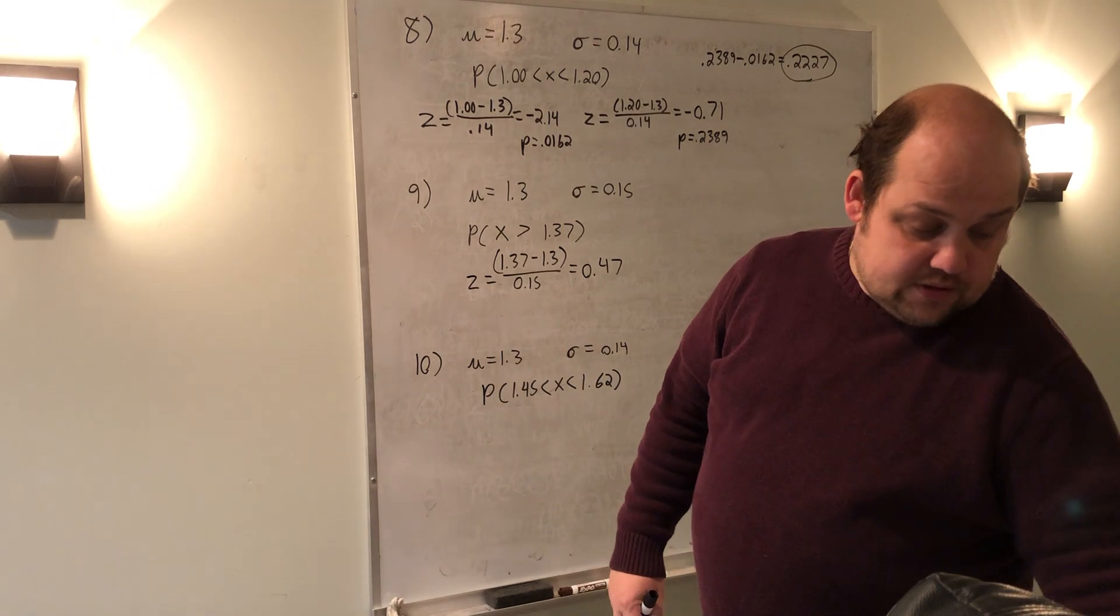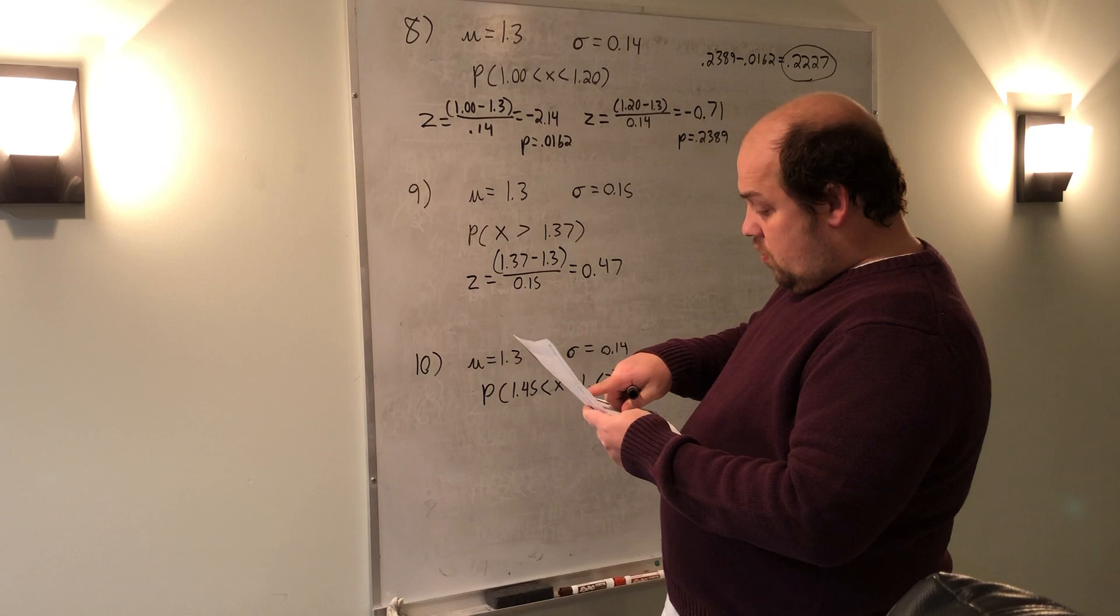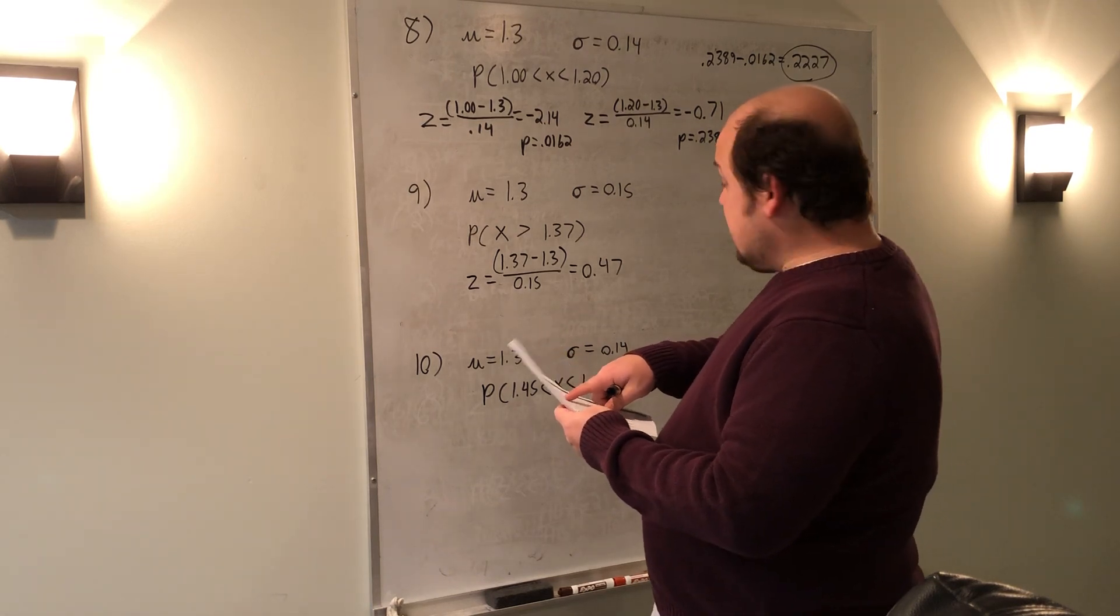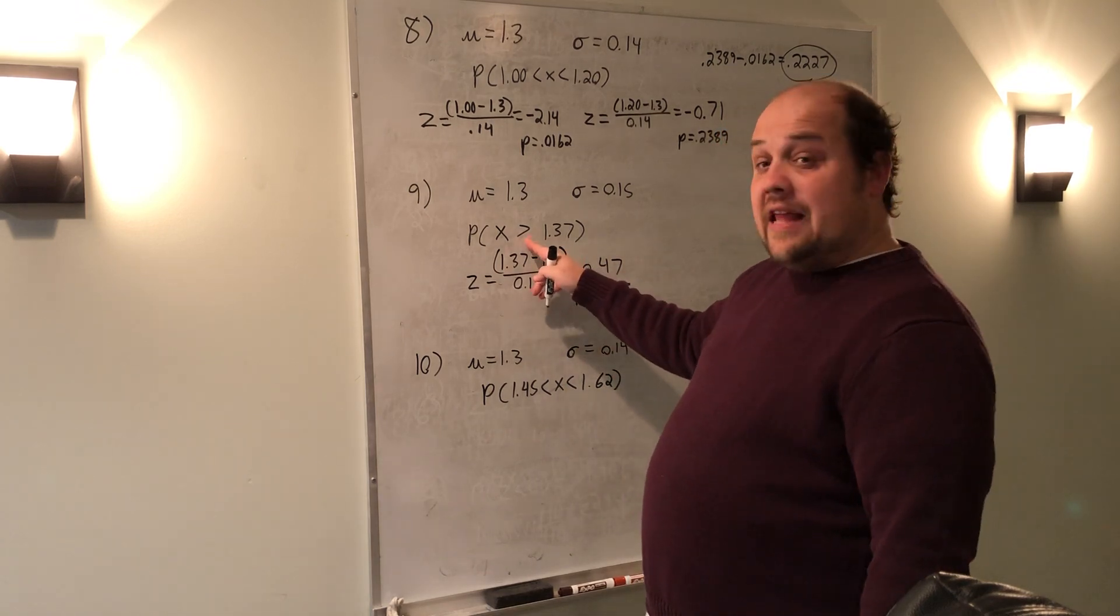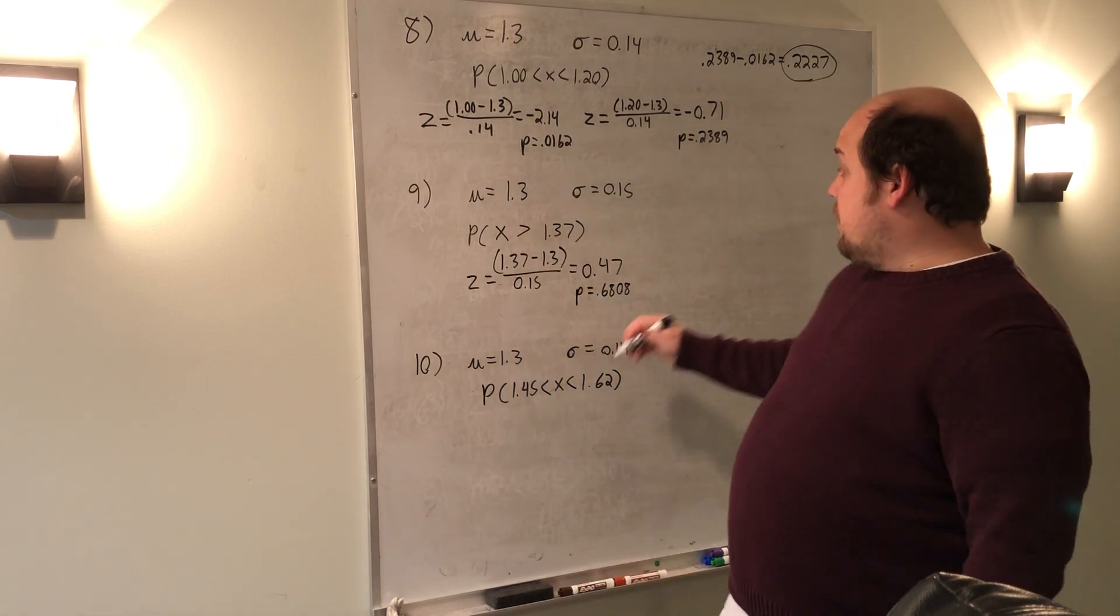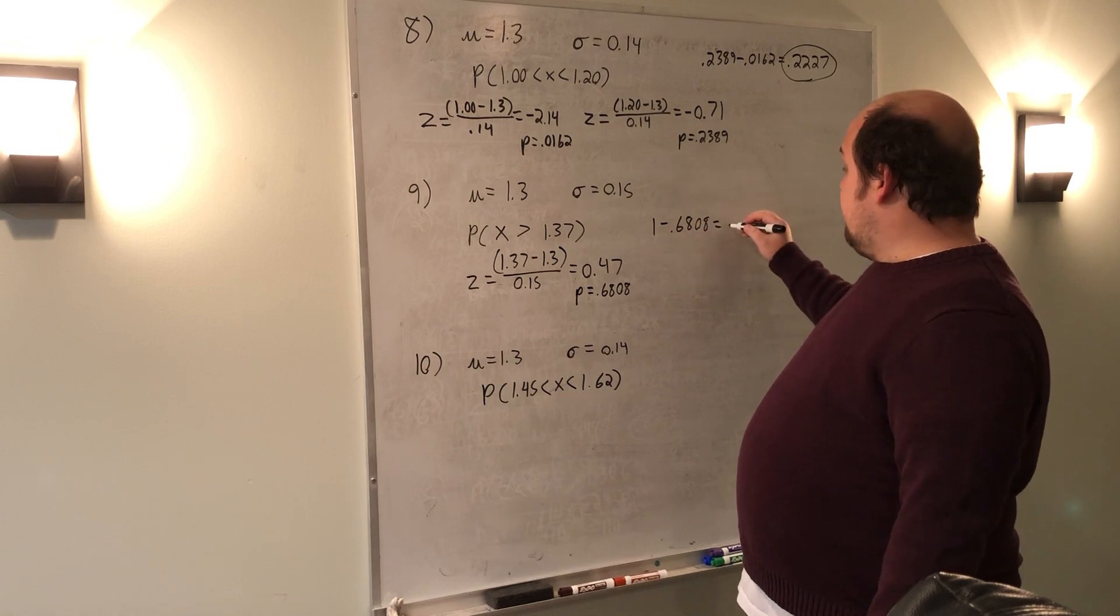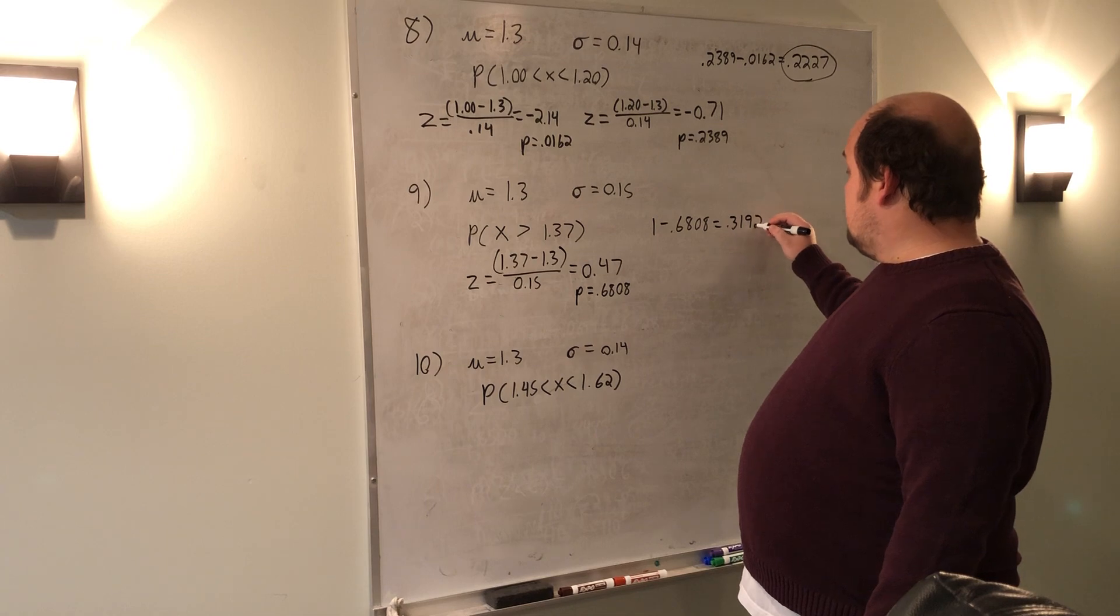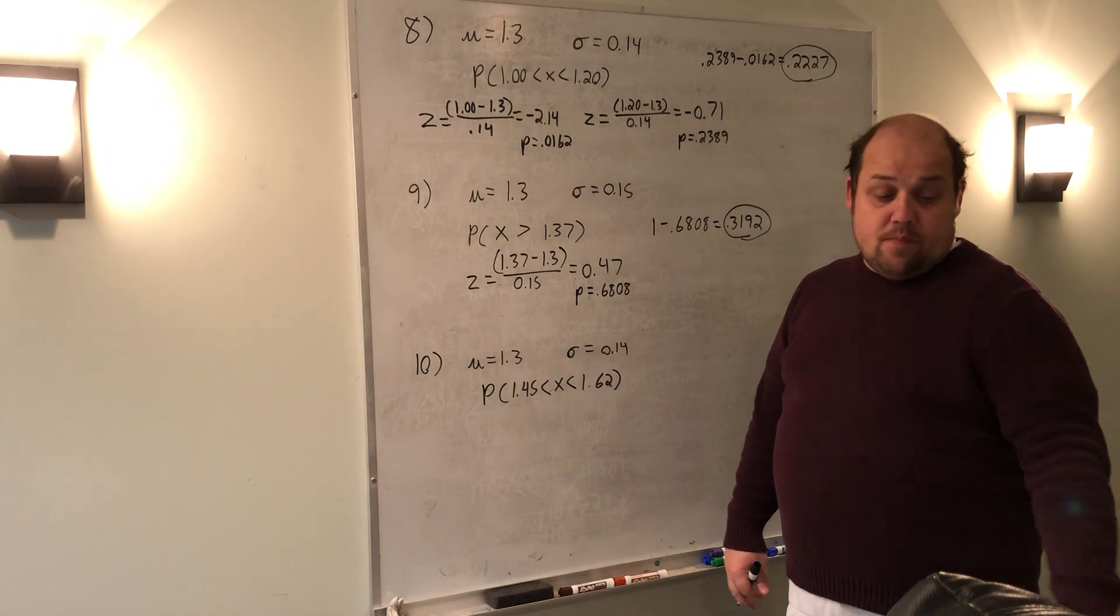I get out my table, this time on the positive side. I go to the row 0.4 over the column 0.07, and I get a p-value of 0.6808. If this had been a less than sign, I could stop there and just use table value. Because it's greater than, I need to do 1 minus 0.6808. That's going to give me 0.3192. This is the correct answer for the probability that x is greater than 1.37.